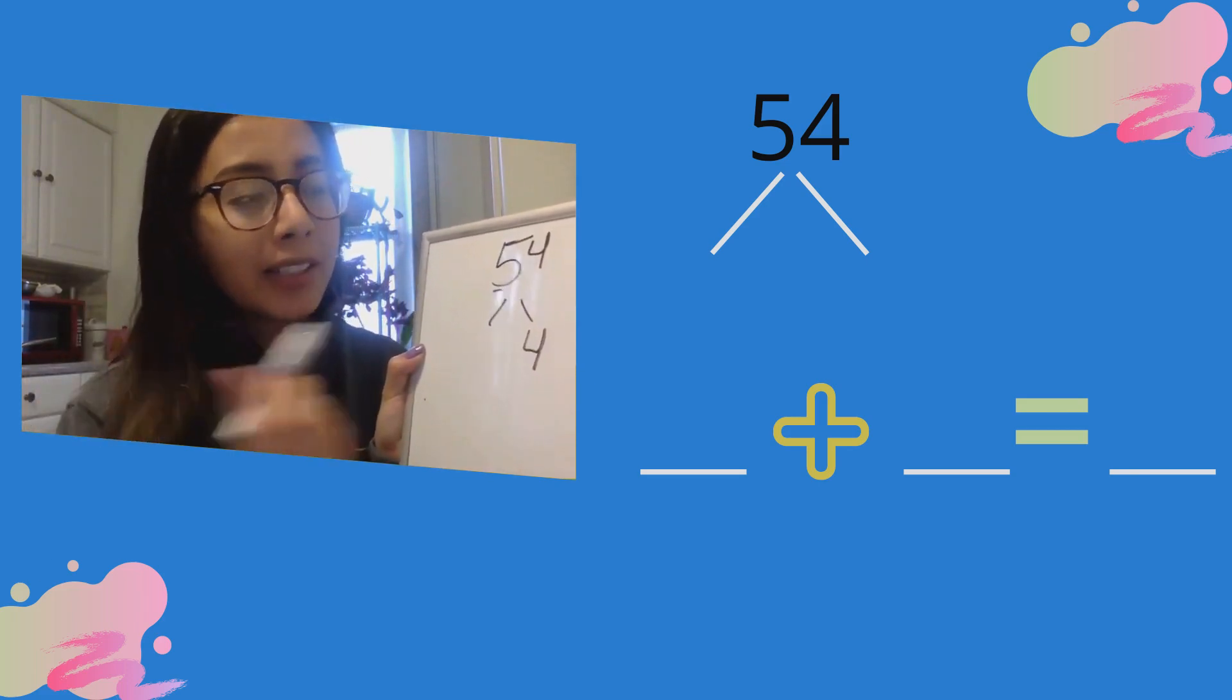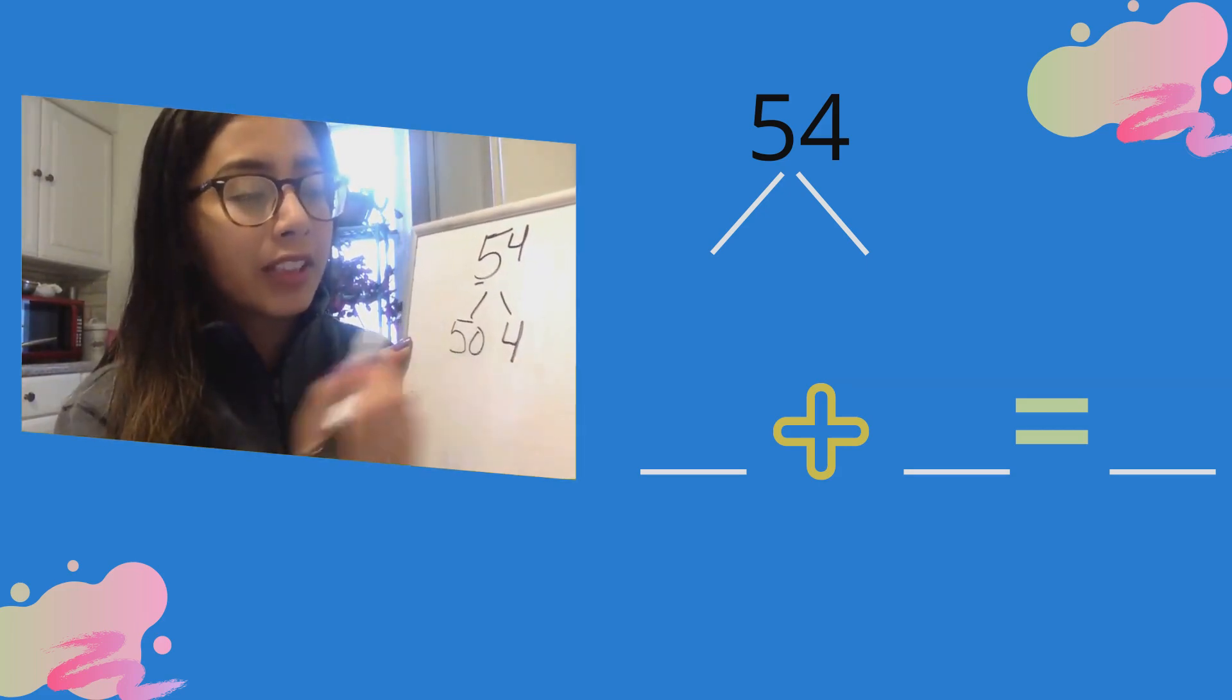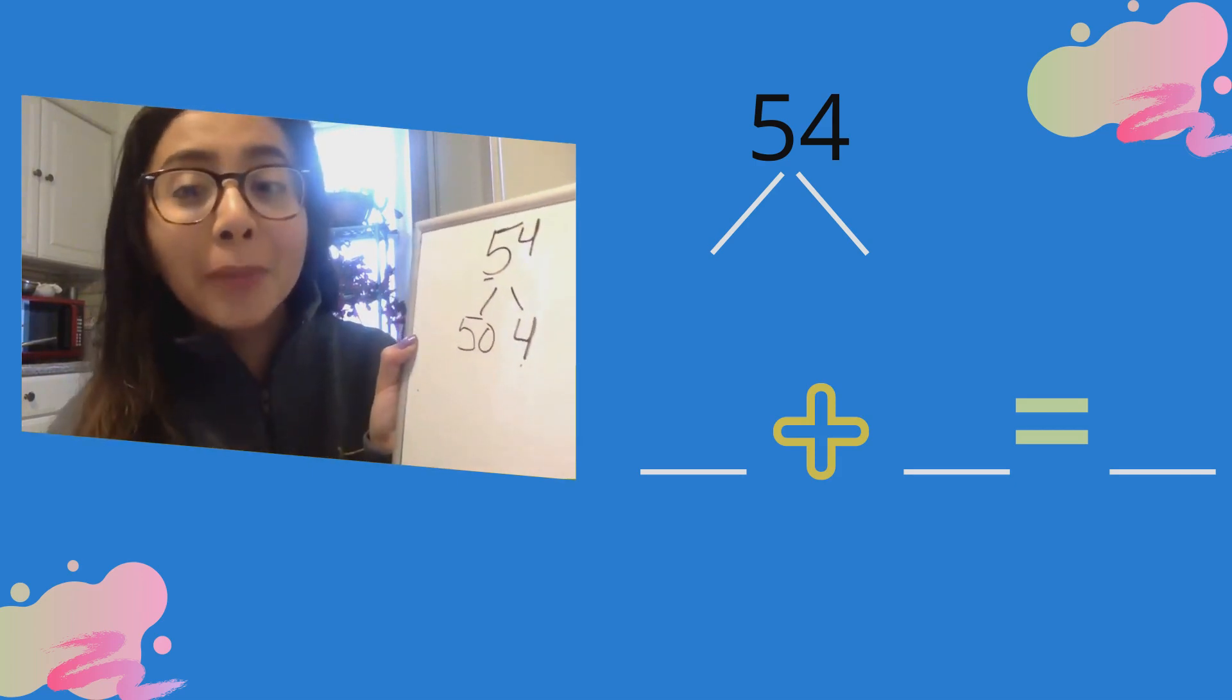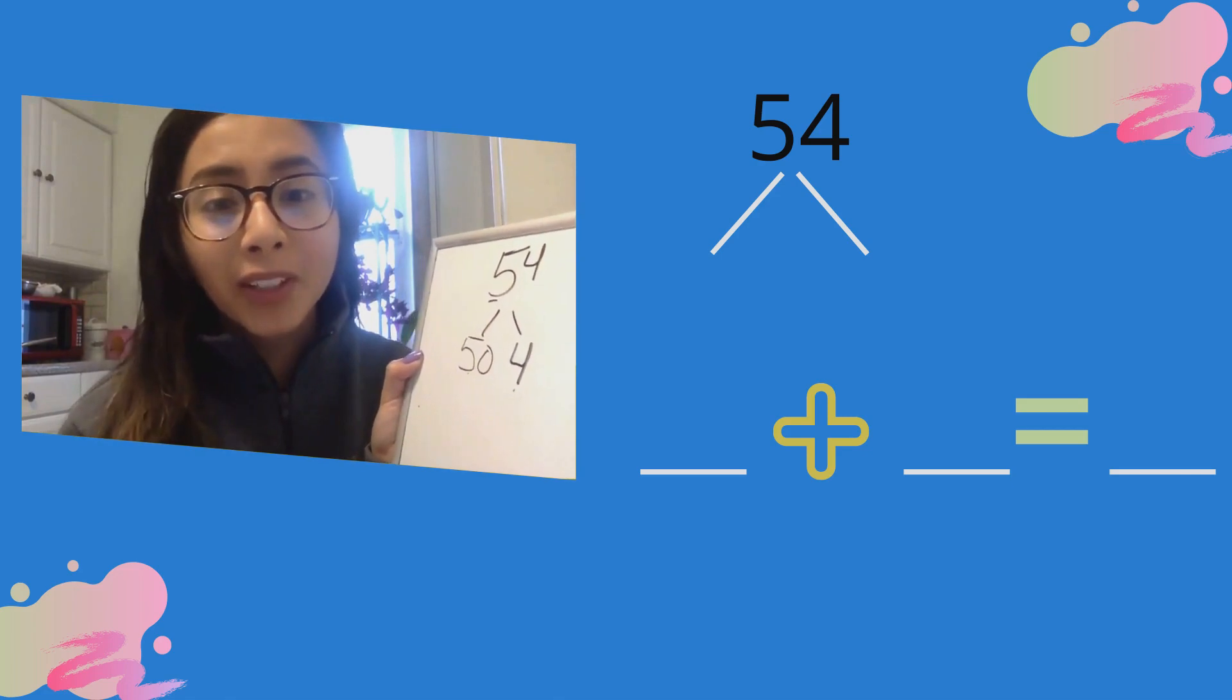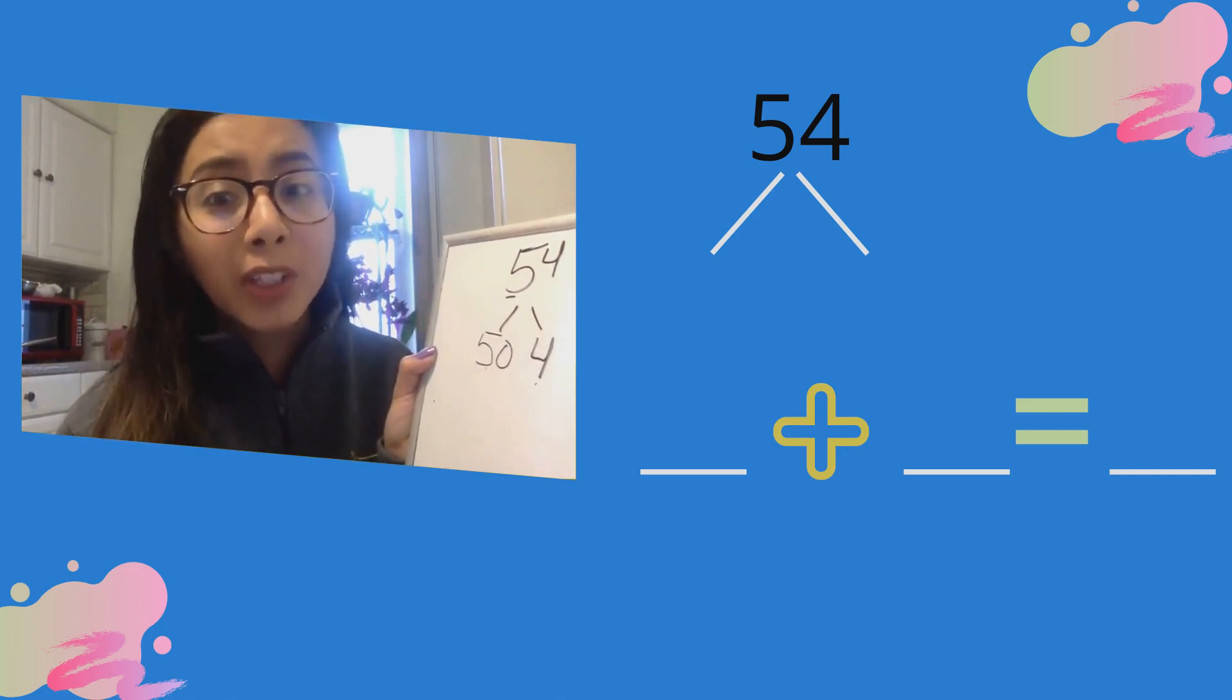But instead of writing five tens, five tens is also the same as 50. 50 all together. So we have 50 and 4 makes our number bond of 54. Let's write two number sentences.